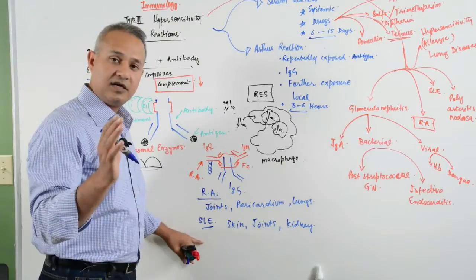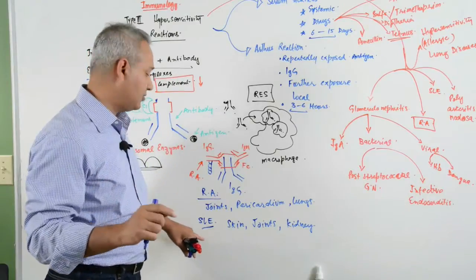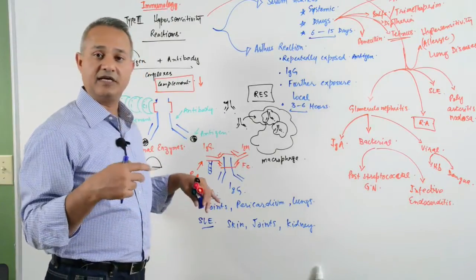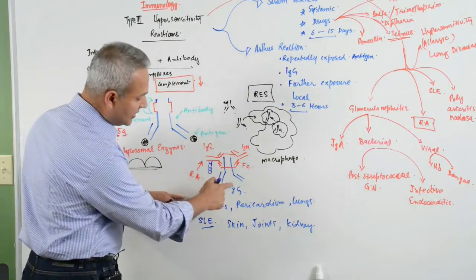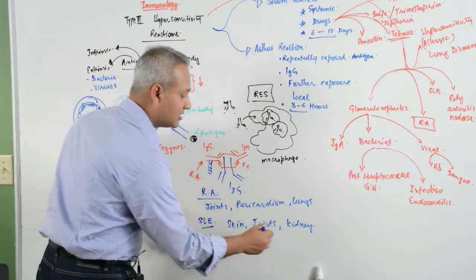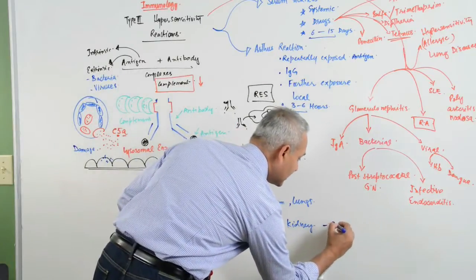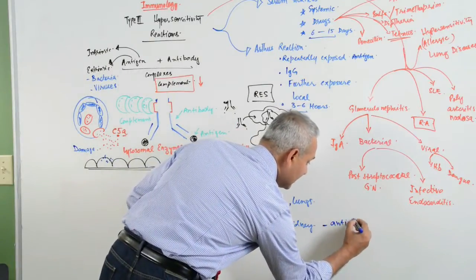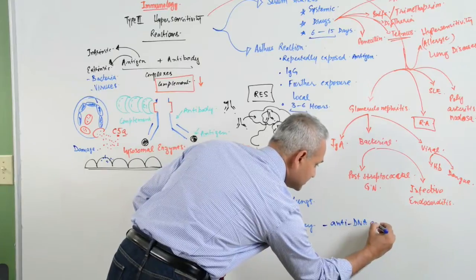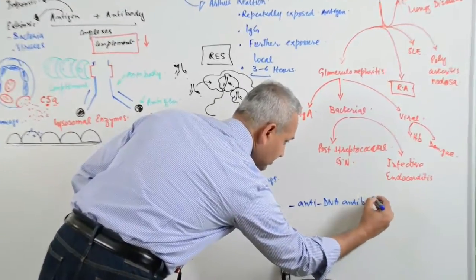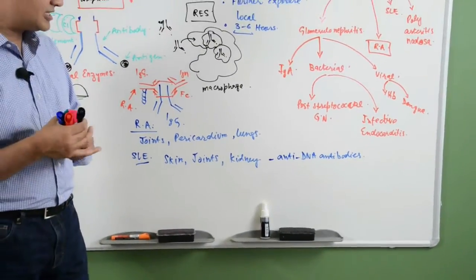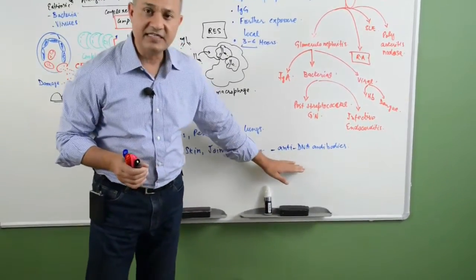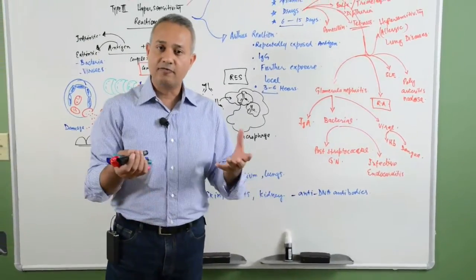The reason is still the same, there are autoantibodies against these tissues. In case of SLE though, the antibodies are not directed against the antibody, but rather these are directed against DNA. There are anti-DNA antibodies. The question many students have asked me is how do anti-DNA antibodies form?